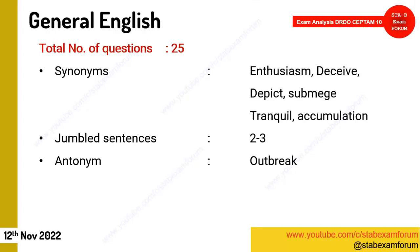Synonyms were asked — words included enthusiasm, deceive, depict, submerge, tranquil, and accumulation. These are fairly simple synonyms. Two to three jumble sentences appeared — easy and scoring. An antonym question on the word 'outbreak' was also asked. Overall, English was comparatively easy if you have a good understanding of the subject.